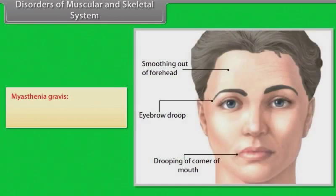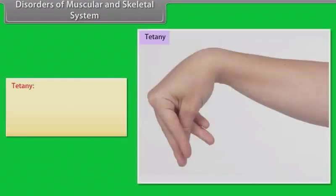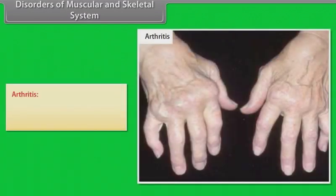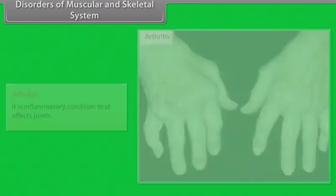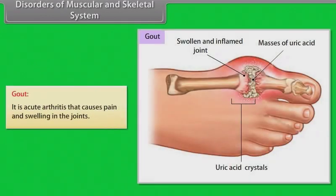Disorders of muscular and skeletal system: Myasthenia Gravis is an autoimmune disease that causes weakness of muscles. Muscular Dystrophy is a group of genetic diseases due to which muscle fibers are susceptible to damage. Tetany is an abnormal condition characterized by painful muscular spasms due to faulty calcium metabolism. Arthritis is an inflammatory condition that affects joints. Osteoporosis is a disease in which the bones become extremely porous and subject to fracture. Gout is acute arthritis that causes pain and swelling in the joints.